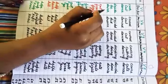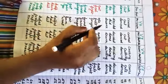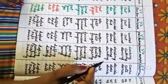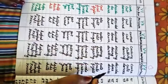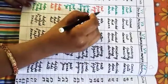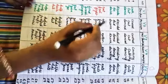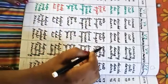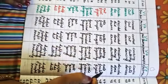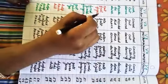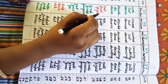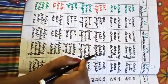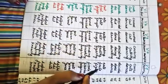Drink — meaning 'peena' (to drink). Second form: drank. Third form: drunk. Fourth form: drinking. Fifth form: drinks. Eat — meaning 'khana' (to eat). Second form: ate. Third form: eaten. Fourth form: eating. Fifth form: eats. Feel — meaning 'mahsous karna' (to feel). Second form: felt. Third form: felt. Fourth form: feeling. Fifth form: feels.